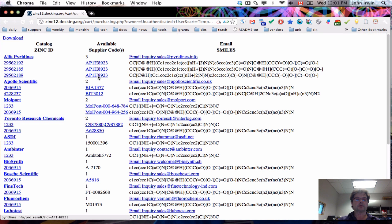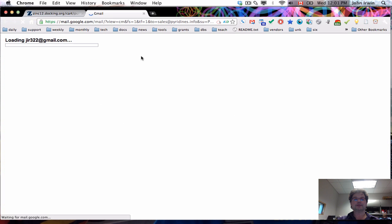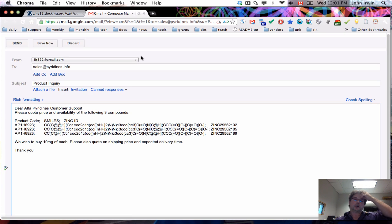Now we're going to click on the purchaseability report and you can see that the company called Alpha Pyridines actually sells three of those six molecules. If you want to purchase them here are the SMILES, here are the codes, but you can simply click on this link and it will compose an email message for you so that you can inquire about the price and availability of those compounds and all you need to do is click send.